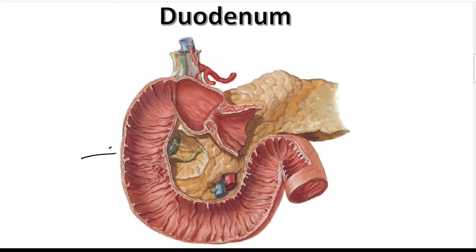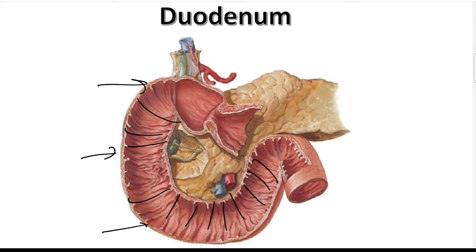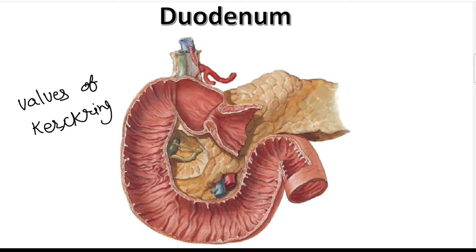The second part of the duodenum extends from the superior duodenal flexure to the inferior duodenal flexure. There are numerous circular mucosal folds starting from the second part, and these circular folds are known as the valves of Kerckring.